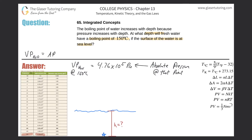I've chosen a random point below sea level, under the water. At this particular point, the absolute pressure must be 4.76 times 10 to the 5 Pascals.